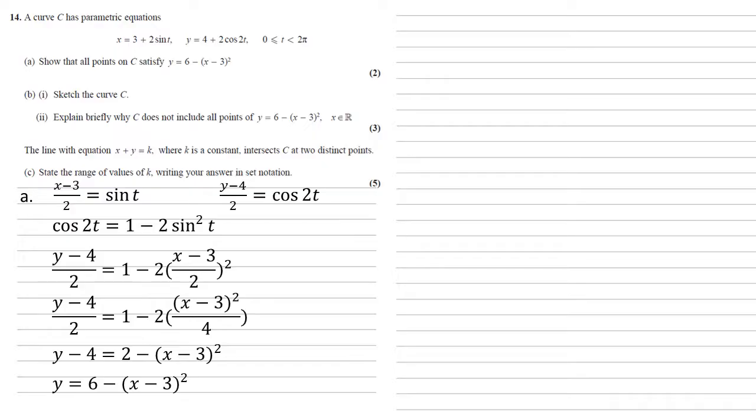So we now need to sketch our curve. The first thing to notice is that our curve is of the form y equals minus x squared. So it's a quadratic curve, it's upside down because it's negative. But then we need to look at the fact it's got a plus 6 at the beginning and there's a minus 3 inside the brackets with the x before it gets squared.